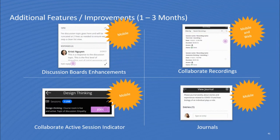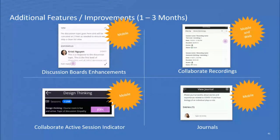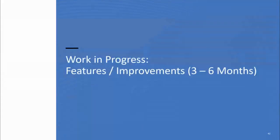The last items in this section focus on our mobile experience. We continue to align our mobile solution to our web responsive version of Learn Ultra — optimizing discussion board flows, giving easier access to Collaborate recordings, and providing a much clearer indication in the app that a Collaborate session is in progress. This shows how we continue to deepen integration within our own solutions beyond what any third-party solution could offer. We'll also be releasing full support of journals in the app.